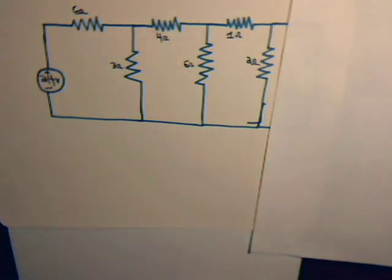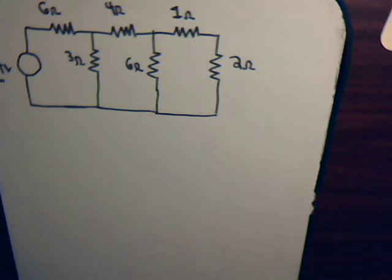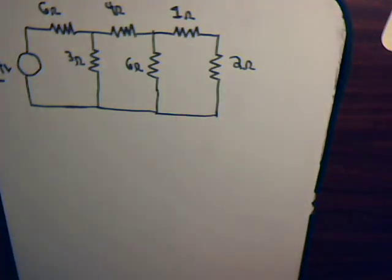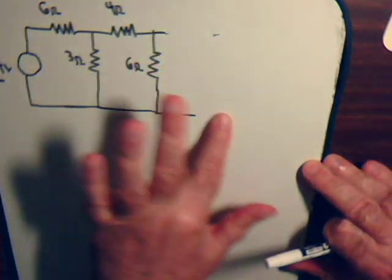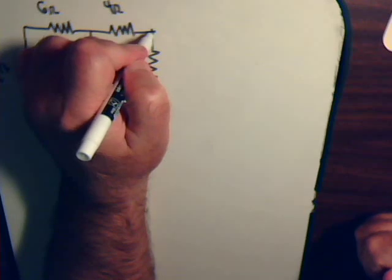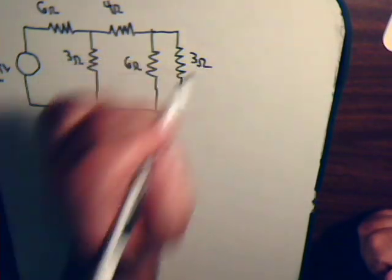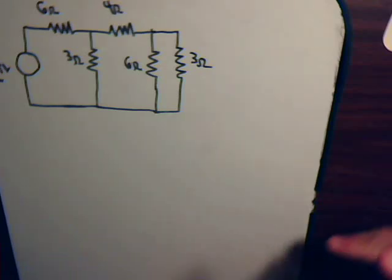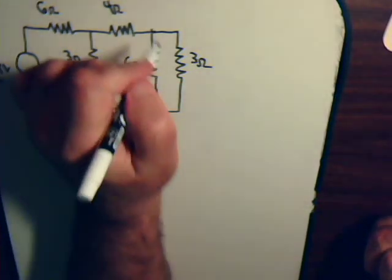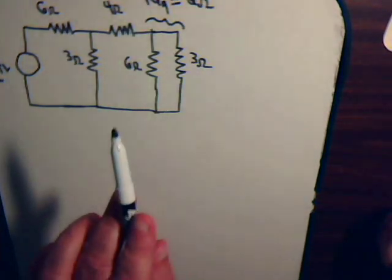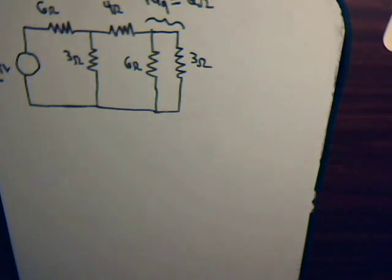If we ignore the current source, then the circuit would just look like this, which we have drawn right here. Now, clearly these two resistors — the 1 and the 2 — are in series with each other. So let's just redraw this as a total of 3 ohms. These two parallel resistors now will have an equivalent resistance of just 2 ohms: 6 times 3 divided by 6 plus 3 equals 18 divided by 9, which is 2.